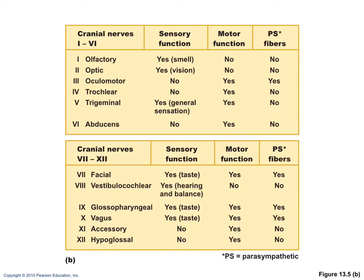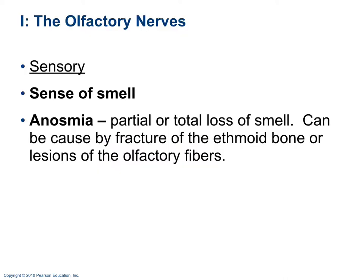Cranial nerve 1 is the olfactory nerve — it is sensory and controls the sense of smell. Damage to this nerve causes anosmia, which is partial or total loss of smell. Causes include fracture of the ethmoid bone or lesions of the olfactory fibers.